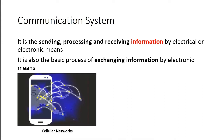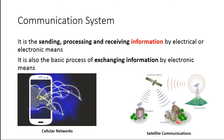An example of a communication system is cellular networks. Our phones can send and process information so that other users can receive the information we sent. Another example is satellite communication — a TV station transmits its programs through the satellite, which serves as the medium, and by the use of our televisions we can receive the signals transmitted by the television networks.